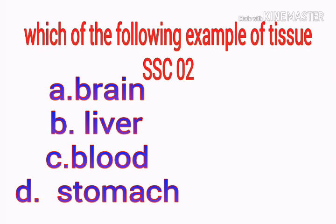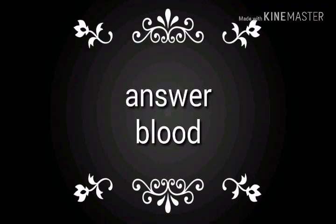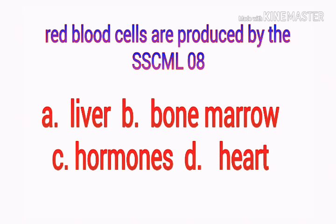Which of the following is an example of tissue? Options: a) brain, b) liver, c) blood, d) stomach. Your answer is blood.